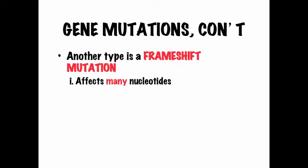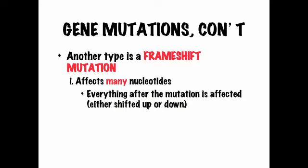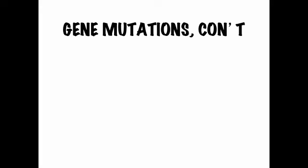Another type of gene mutation is called a frameshift mutation. These are much more severe because they affect many nucleotides — many letters are out of place. Everything after the mutation is either shifted up or shifted down. This will change the entire protein, not just one amino acid, which is not good.